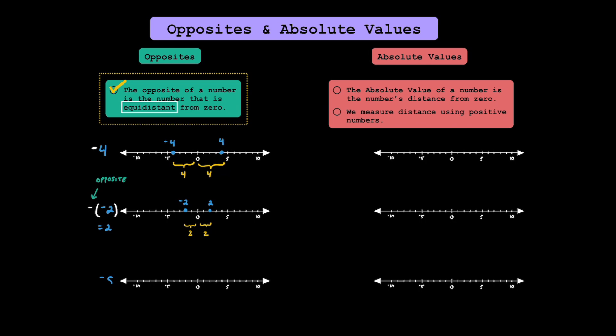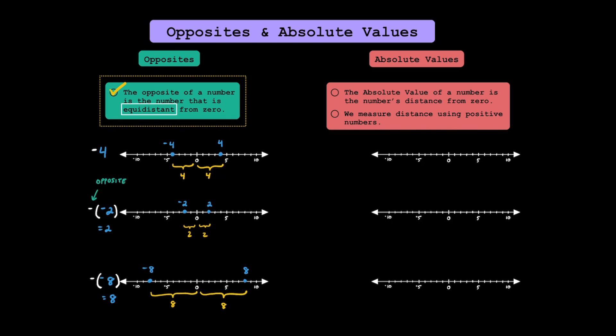It's important to start thinking about negative signs as meaning the opposite. Let's look at another example, like negative 8. Negative 8 is going to be over here to the left between negative 5 and negative 10. We can see that 8 is 8 units away from zero. To find the opposite of negative 8, we would take negative 8 and put a negative in front of it. A negative negative 8, or the opposite of negative 8, is just going to be positive 8. Things check out because positive 8 is also 8 units away from zero. While the opposite of a positive number is negative, the opposite of a negative number is always going to be positive.